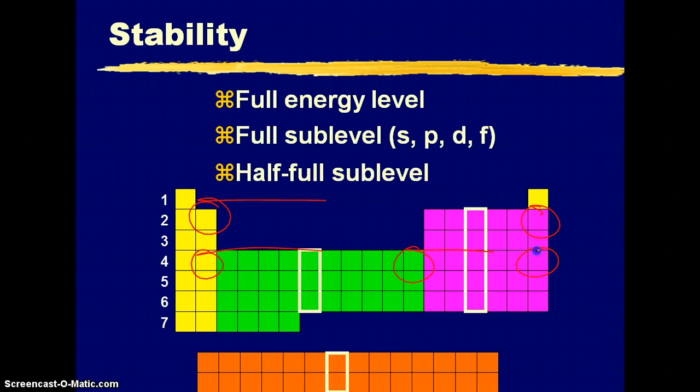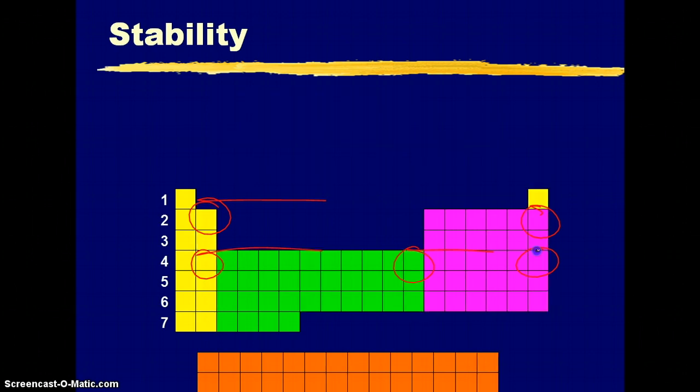Then the full, and then the half full. Half full, you're talking about like having on the P orbital, you'd have one up, one up, one up. That's half full. Or D, you'd have five all going up. So they're all going in one direction, and this does affect stability. So most stable is a full energy level, second most stable is a full orbital, so full S, a full P, a full D, a full F, and the third most stable is going to be half full orbitals.